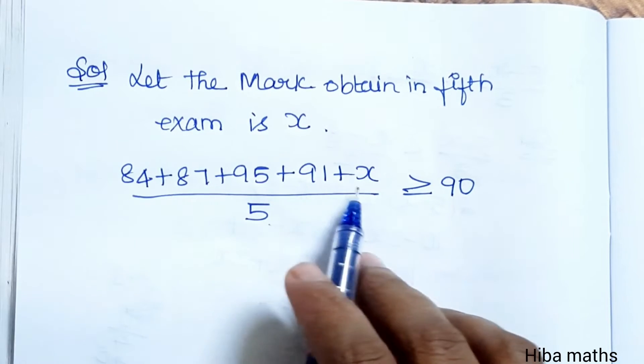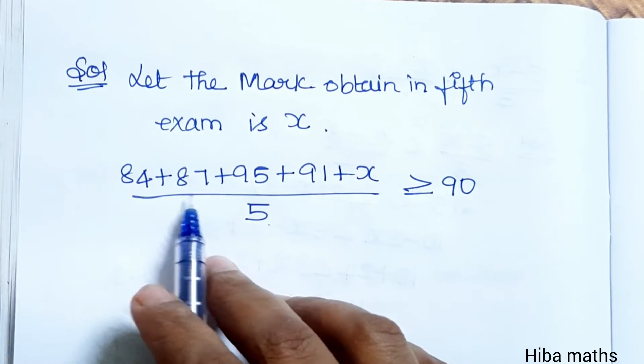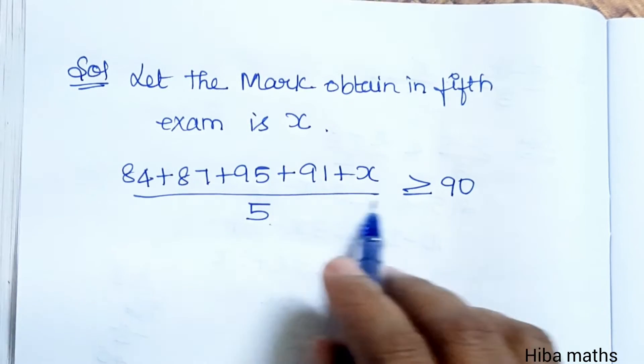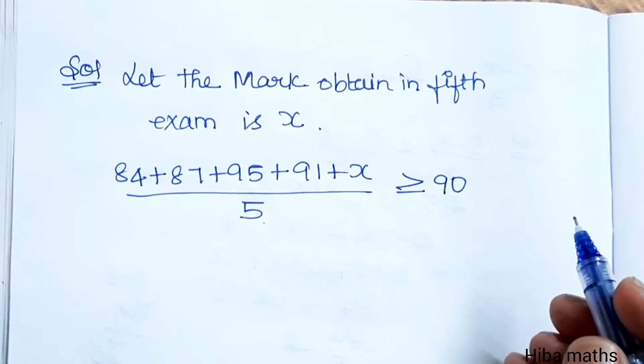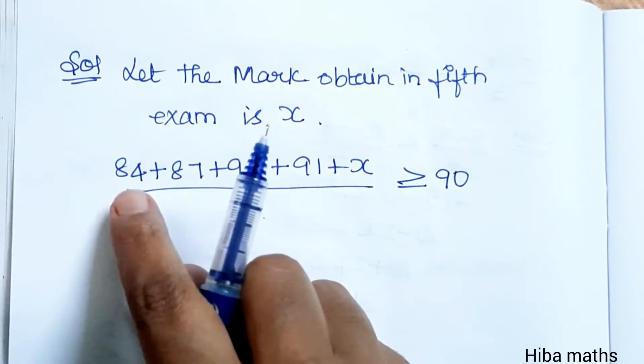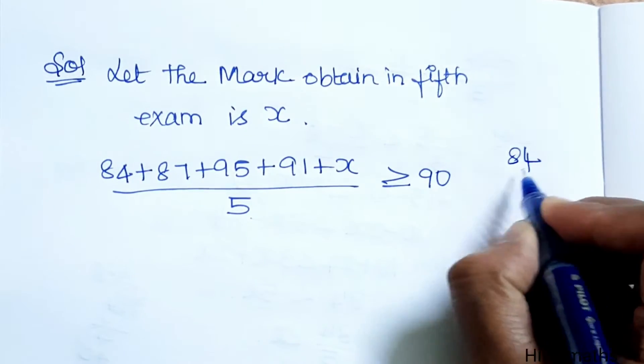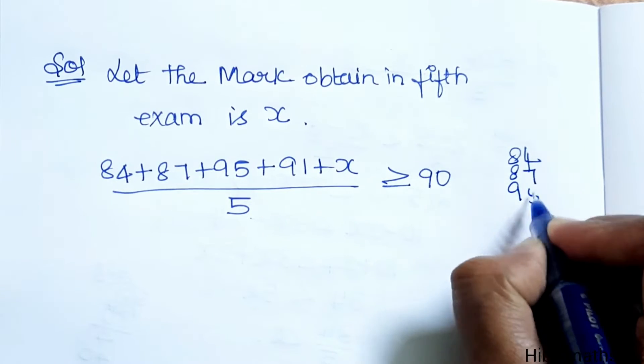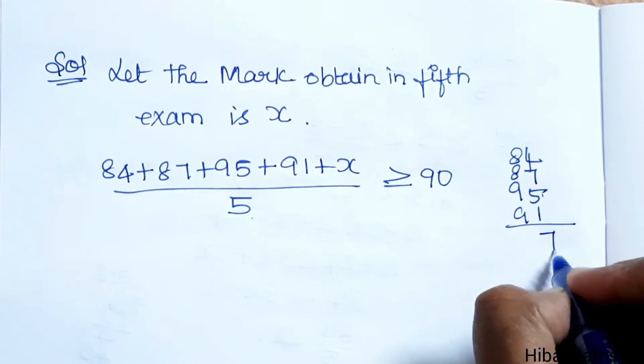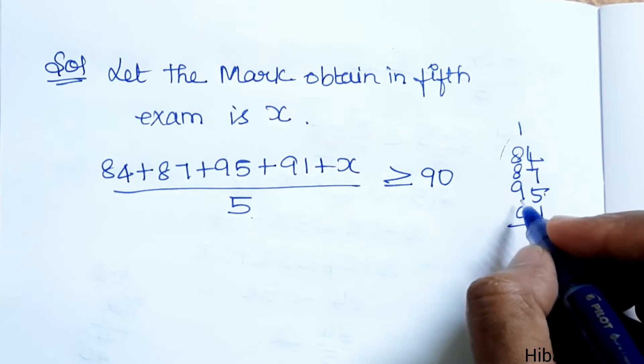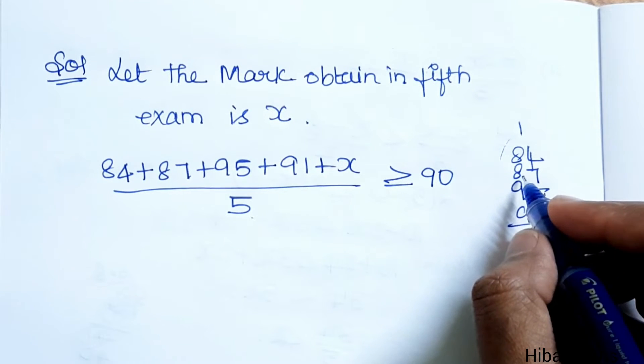So, the marks are 84, 87, 95, 91, plus x, divided by 5, greater than or equal to 90. Now, let us add this: 84, 87, 95, 91. Adding these: 6, 13, 17, balance 1, 10, 19, 27, 35.